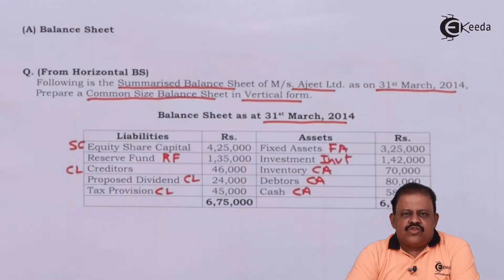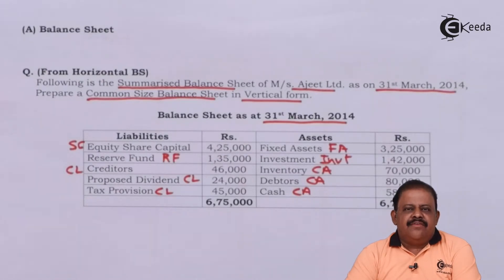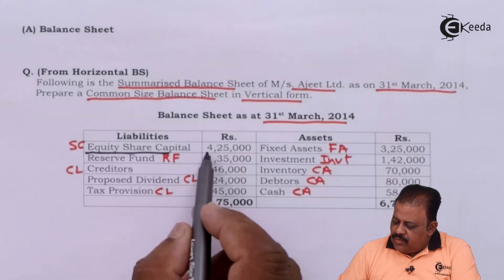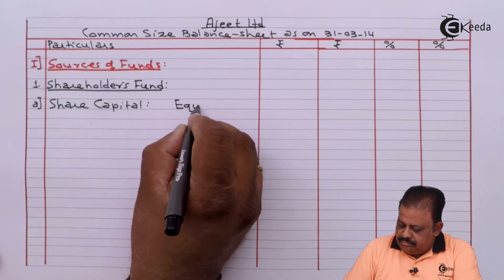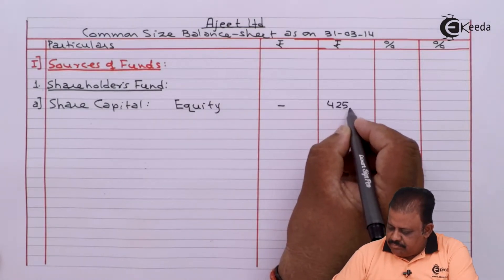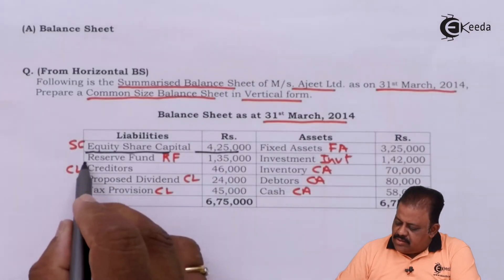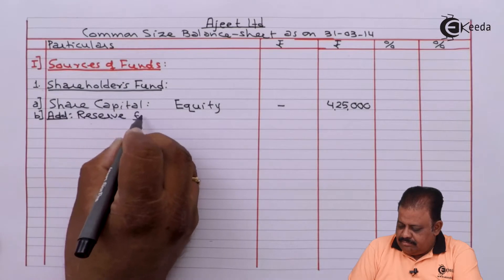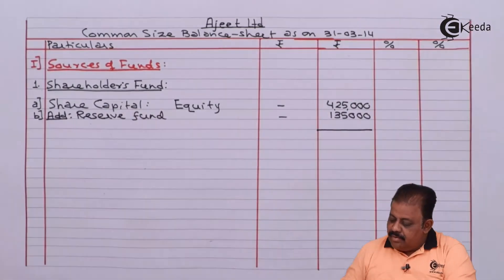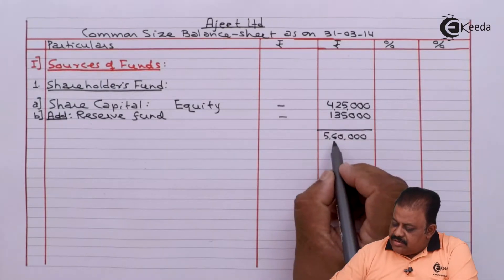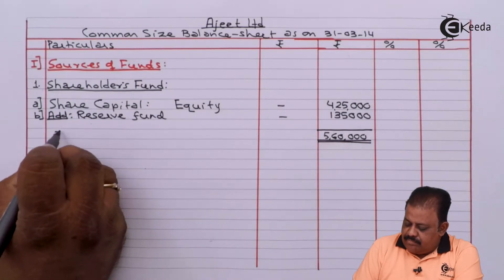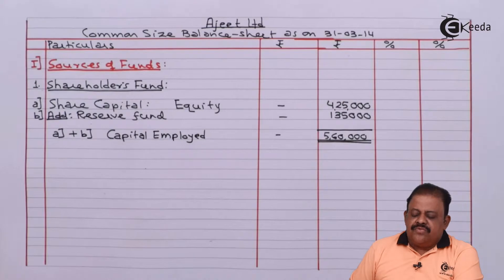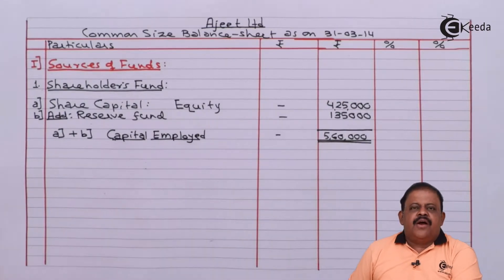The first part of the balance sheet is sources of funds. In sources of funds, the first item is shareholders fund. Under shareholders fund, we have equity share capital of 4,25,000. To this we add reserves fund of 1,35,000. This gives us the total capital employed, which is the total of the first part of the balance sheet.